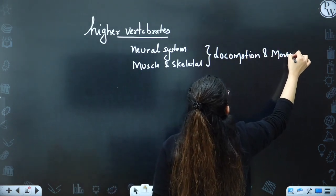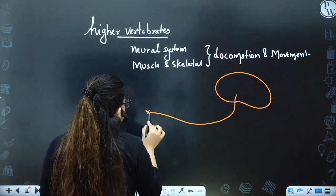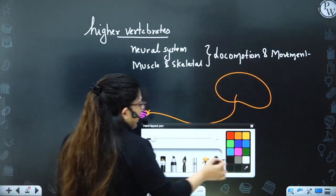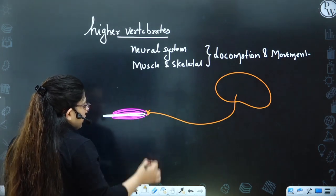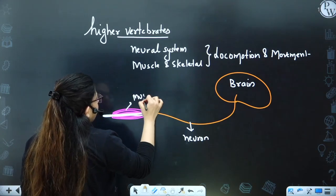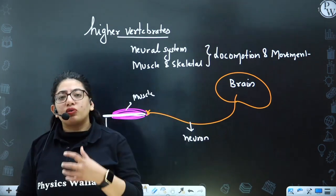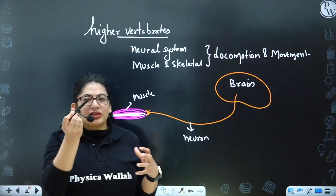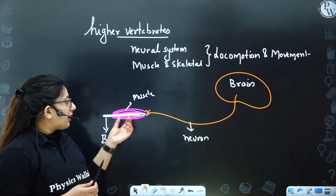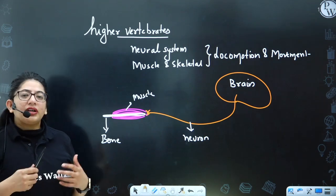The brain sends information through neurons which innervate the skeletal muscles. These muscles then contract, causing the attached bone to move. The command center is the brain, the information travels via neurons to the skeletal muscle or smooth muscle, and when the muscle contracts, the bone moves. This is how all three systems work together as a unit to produce locomotion and movement.